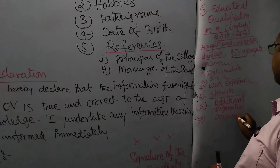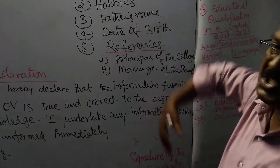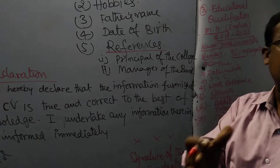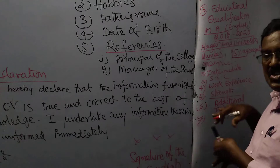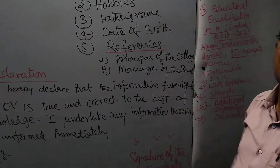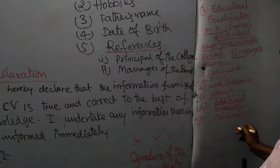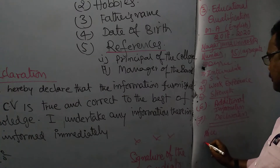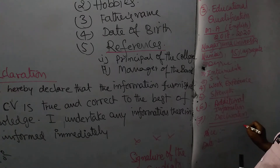Next one, finally: declaration. Declaration means you have to announce finally that the information furnished — means written — in the form of CV is true and correct, to the best of my knowledge. I undertake means I assure you: any change which will be taking place in our curriculum vitae, I will inform you immediately. Finally, place and date you have to mention on the left-hand side at the bottom of the CV. On the right-hand side you have to mention the signature.